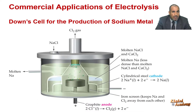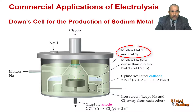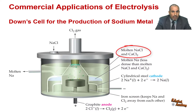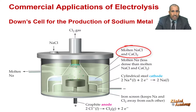The first example is the manufacture of sodium. Sodium metal is produced commercially in the Down cell by electrolysis of a molten mixture of sodium chloride and calcium chloride. The presence of calcium chloride allows the cell to operate at a lower temperature because the melting point of this mixture is about 580 degrees centigrade, while the melting point of pure sodium chloride is 801 degrees centigrade.